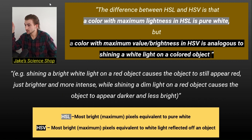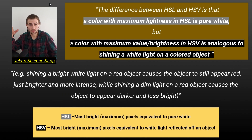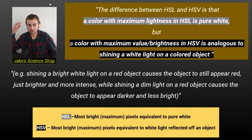The key difference between HSL and HSB is that a color with maximum lightness in HSL is pure white, but the color with maximum value/brightness in HSB is analogous to shining a white light on a colored object. This is similar to how we shine lights on objects — we don't see a pure white reflection, but a variation of the color we're shining the light upon. For example, shine a light on an apple and you'll see some red reflecting off it.